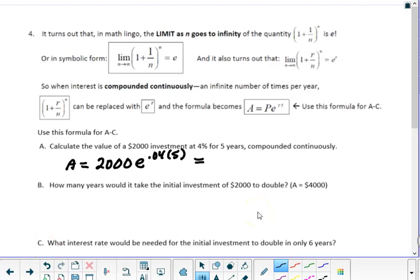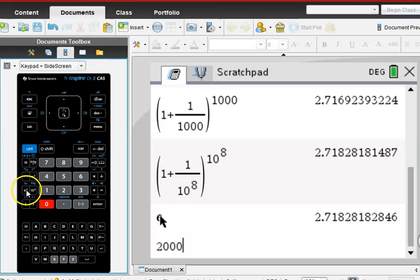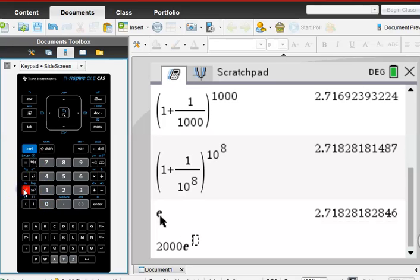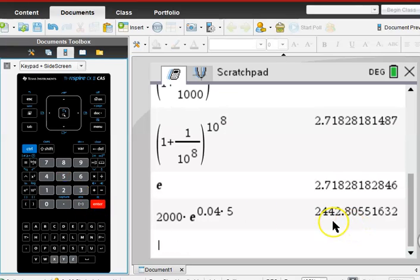I lied. I'm going to show you one more thing on the calculator so you'll know. So, go to your calculator. And how do you do this on the calculator? 2,000. Now, you'll notice there's an E to the X button. Push the E to the X. That opens the exponent automatically. And then you can do 0.04 times 5. And you get $2,442.81.